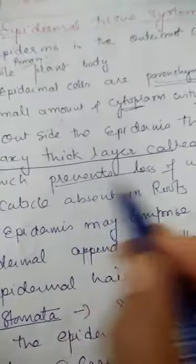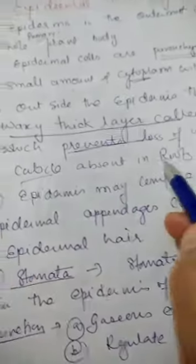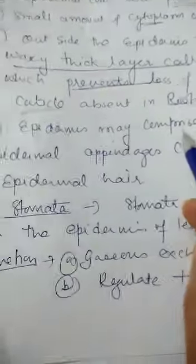What is the function of the cuticle? To prevent the loss of water, and cuticle is absent in the roots. This everything I have told you in previous video. And epidermis may comprise other appendages - these are epidermal hair, trichomes, and stomata.